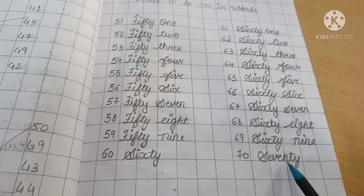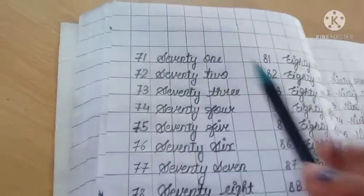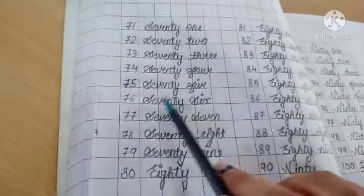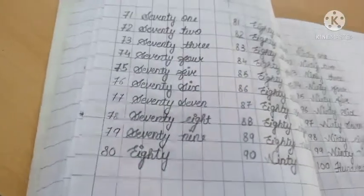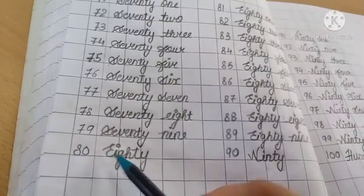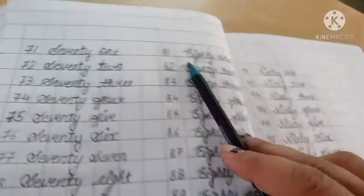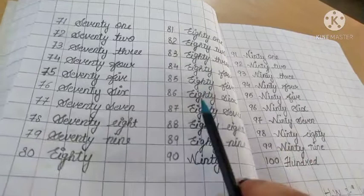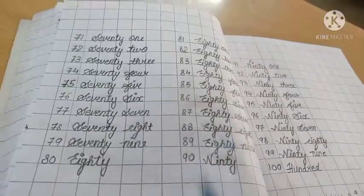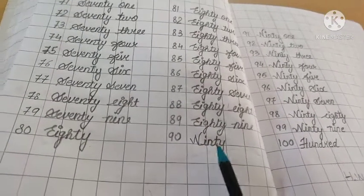S-E-V-E-N, seven, T-Y. So seventy's spelling is made. Now 71, 72, 73, 74, 75, 76, 77, 78, 79. And 80. 80, E-I-G-H-T-Y, eighty. 81, 82, 83, 84, 85, 86, 87, 88, 89, and 90. N-I-N-T-Y.